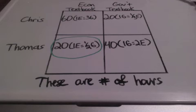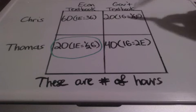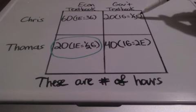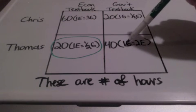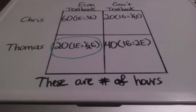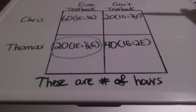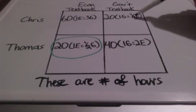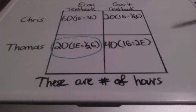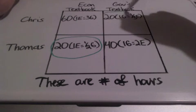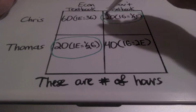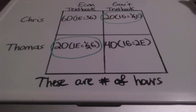Now for the government textbook: for Chris, for every one government textbook that he can produce, he can also produce one-third of an economics textbook. And for Thomas, for every one government textbook that he can produce, he can also produce two economics textbooks. So who is giving up less of the other good — less of the economics textbooks? One-third of an economics textbook would be less than two, so I circle this — and this tells me that Chris has a comparative advantage in producing government textbooks.